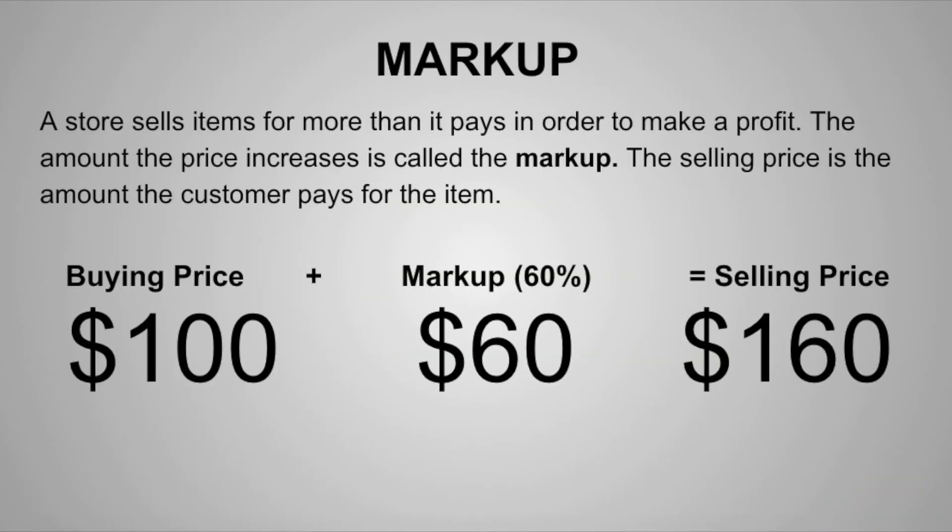The final topic is markup. A store sells items for more than it pays in order to make a profit. The amount the price increases is called the markup. The selling price is the amount the customer pays for an item. So in order to find the selling price, we will have the buying price, so the actual price the store pays for an item, and we will add on to that the markup. So in this example, they marked it up 60%, which was equal to $60. So the final selling price would be $160.